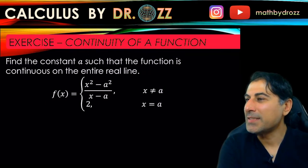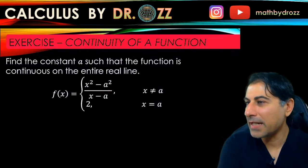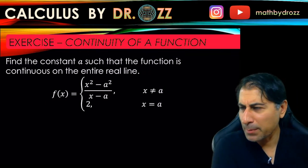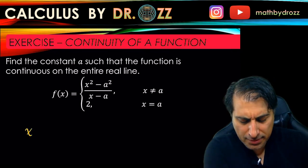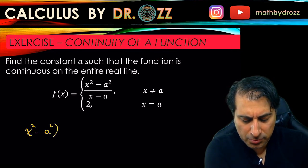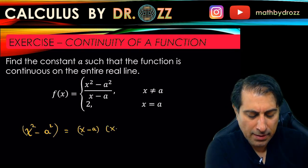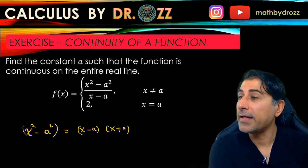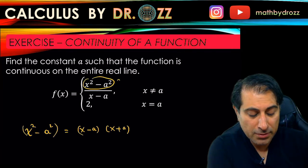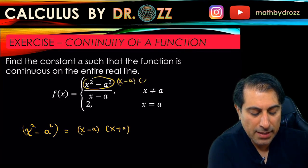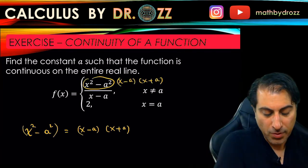Staring at the pieces here, the top piece is x squared minus a squared divided by x minus a. We know that the difference of squares can be written as x minus a times x plus a. So this top piece here is x minus a, x plus a.